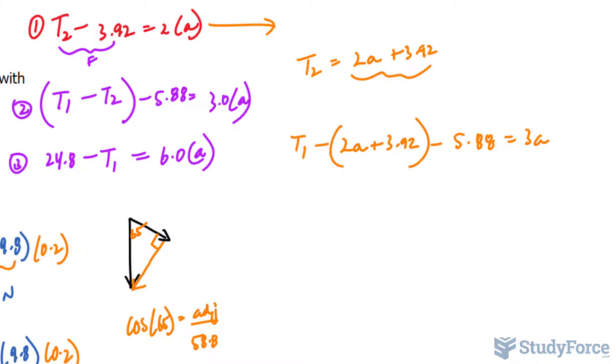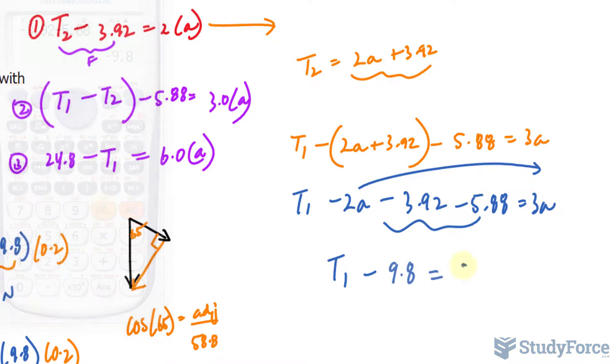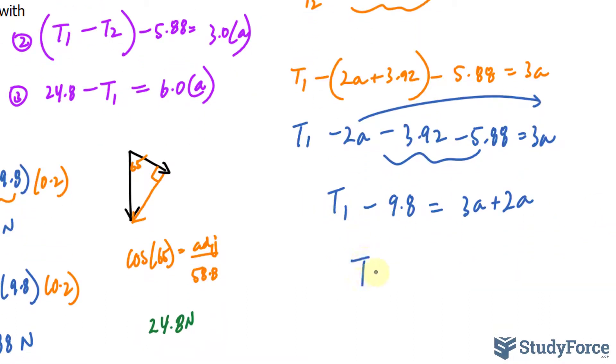Minus 5.88 is equal to 3A. Let's go ahead and solve for T sub 1. I will expand this T sub 1 minus 2A minus 3.92 minus 5.88 is equal to 3A. Let's bring that over T sub 1 minus these two. Let's find out what that is. Negative 9.8 is equal to 3A plus 2A. We're solving for T sub 1, so I'll bring the negative 9.8 over. That becomes 5A plus 9.8.